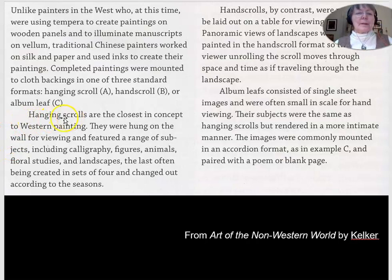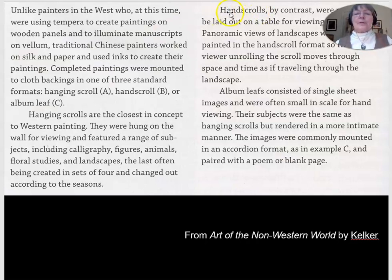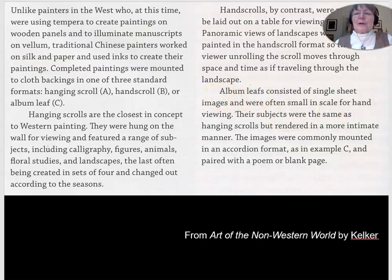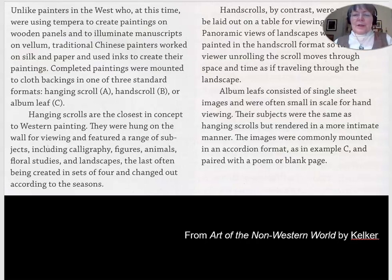The hanging scroll is the closest to what we would experience in the West, because these could be hung on walls for viewing and appreciation. In contrast, the hand scroll was meant to be looked at on a table. You imagine yourself entering the landscape as you unroll it, mentally traveling through the landscape — it involves you and allows you to imagine actually traveling through the land. The album leaf is relatively small in scale and intimate, usually a single sheet, intended for intimate viewing and contemplation.